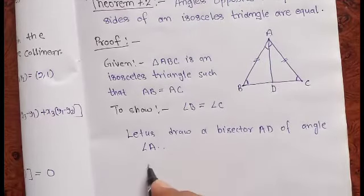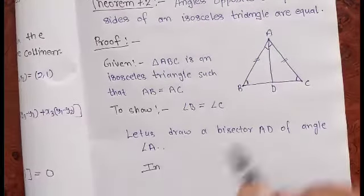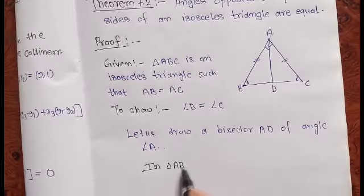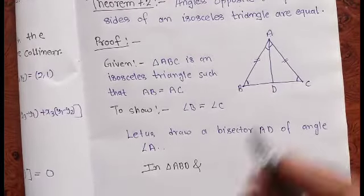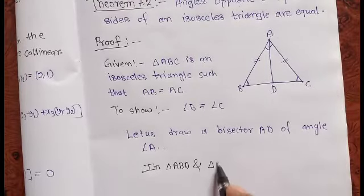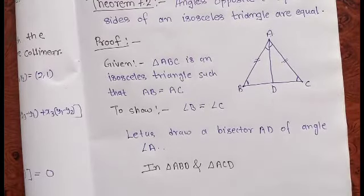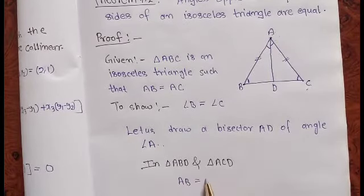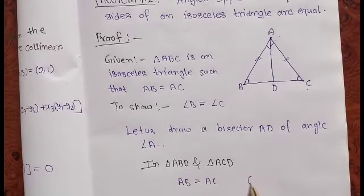Now, in triangle ABD and triangle ACD: First, side AB is equal to AC, given.